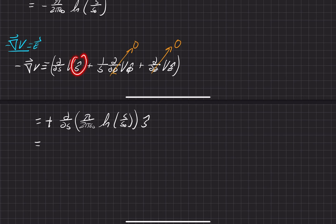We picked up the S hat from the gradient. And then whenever we do that gradient, what we'll get is a positive 2 pi epsilon naught lambda over S hat. And then the partial in respect to S of this right here is just the derivative of natural log of S, which is just 1 over S. And that puts us right back where we started from.